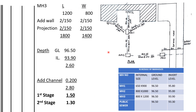For manhole three, the internal length is 1200 and the width is 800. Adding walls and projections, we get a total length of 1800 and total width of 1400. For the depth, ground level minus invert level gives 2.6 meters, and adding the 0.2 meter channel allowance gives a total depth of 2.8 meters.